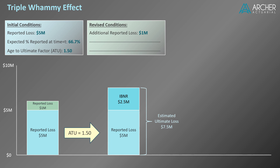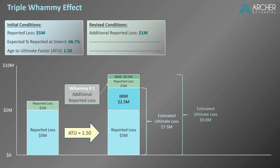Let's apply the reported loss development method to the additional reported loss. The $1 million of reported loss times the age-to-ultimate factor of 1.50 yields an additional $1.5 million of ultimate loss, of which $1 million is the additional reported loss and $500,000 is the additional IBNR. Now we have a total of $9 million of ultimate loss instead of the original $7.5 million estimate. Whammy number one is the addition of the reported loss to our estimate of ultimate loss — this piece should be pretty intuitive. The second whammy is a provision for additional development on the additional reported loss, equal to $500,000, and its magnitude is determined by the age-to-ultimate factor.